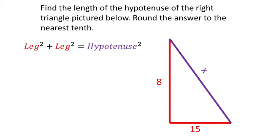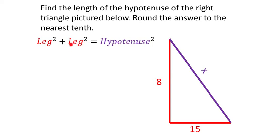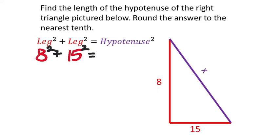Pythagorean theorem: leg squared plus leg squared equals hypotenuse squared. The legs are represented by A and B, the hypotenuse by C. This problem gives us both legs — 8 and 15 — with x as the hypotenuse. Squaring: 8 squared is 64, and 15 squared is 225. Adding those together: 64 plus 225 equals 289, which equals x squared.